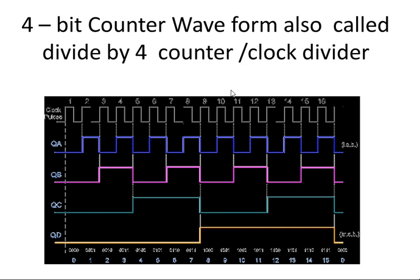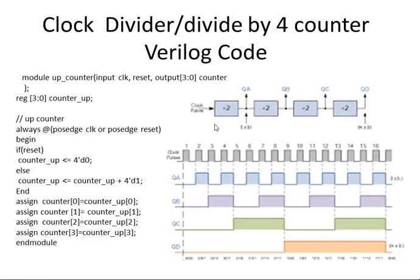We just write the Verilog code for a 4-bit counter. And each output QA, QB, QC will take. Then you will get your divide by clock. Depending on how much frequency you want, you divide the clock correspondingly. But if you want more, then you will divide with a higher bit counter, 8-bit counter. You want to divide this still further, you have to divide with a higher bit counter.